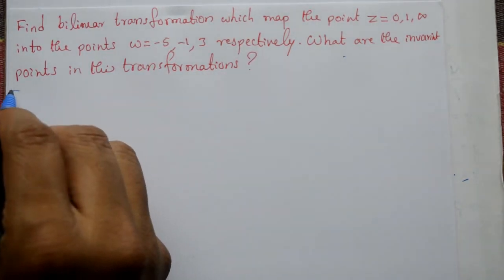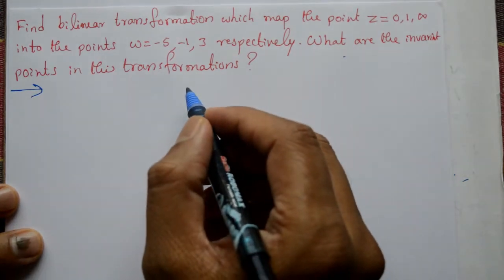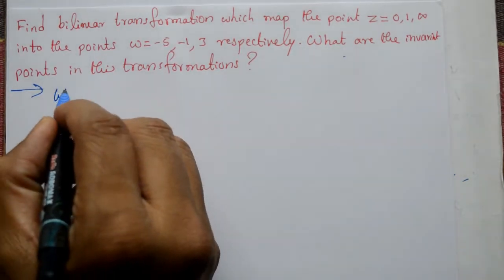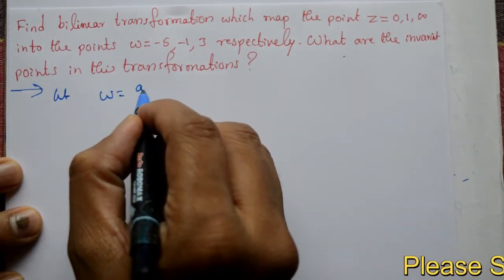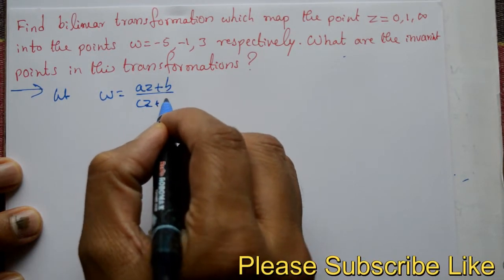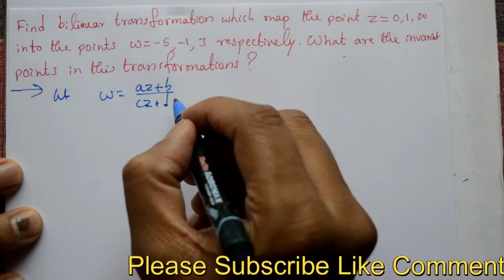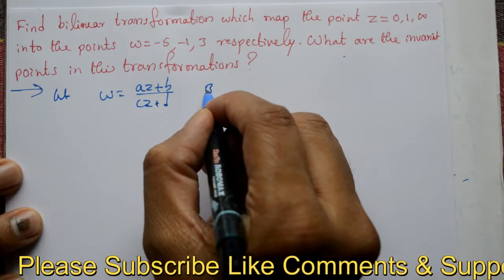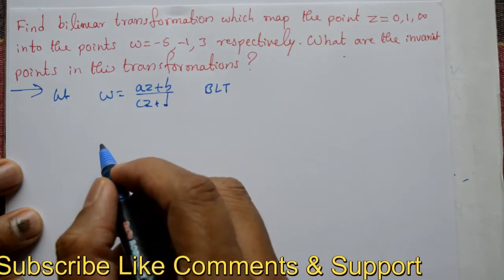This is very very simple. First karenge: let ω = (az + b) / (cz + d). This is the required bilinear transformation form. z and ω values ko equation me dalke hamko unknown values a, b, c, d nikalne hain.